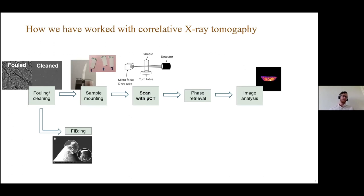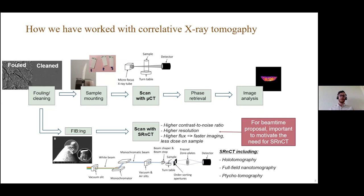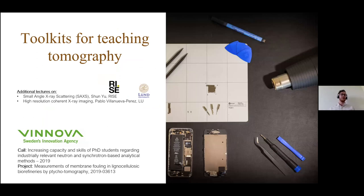In parallel, we also did FIB imaging to prepare membrane samples for synchrotron scans. That's nice because that allows us higher contrast to noise ratio, higher resolution, and higher flux, so less dose on the sample, which means the sample survives longer and faster imaging. However, you have to write a beam time proposal and it's important to motivate the need for this high resolution, which is quite tedious. In the following, Emmanuel will explain what actually is tomography and how you can use it.